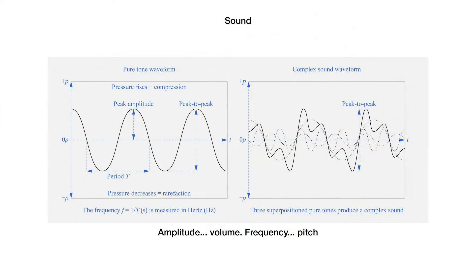Physically, sound is a vibration that travels through a transmissive medium as an acoustic wave. Sound waves are rapid changes of pressure and particle velocity, and music, speech or noise are complex superpositions of sinusoidal sound waves. The amplitude of a sound wave determines its volume, and the frequency determines its pitch. In this tutorial, we are concerned with the amplitude — the volume or loudness.